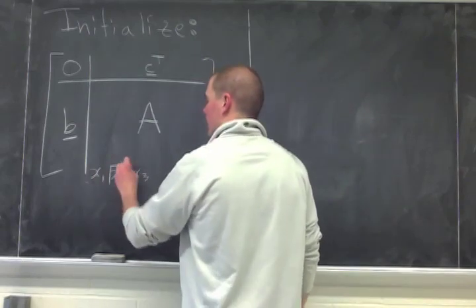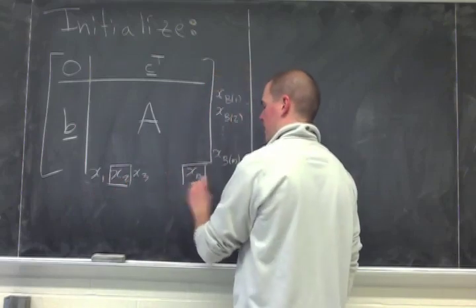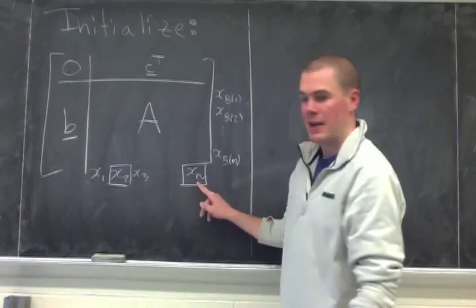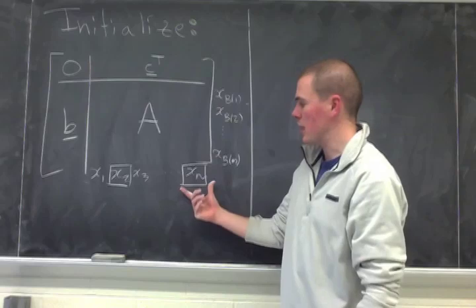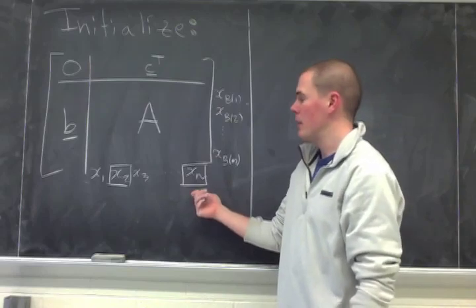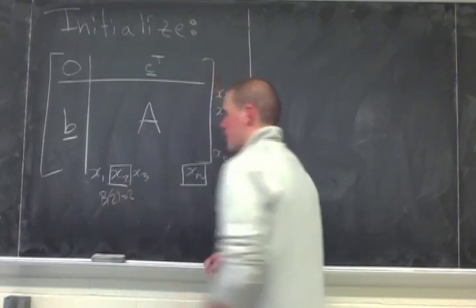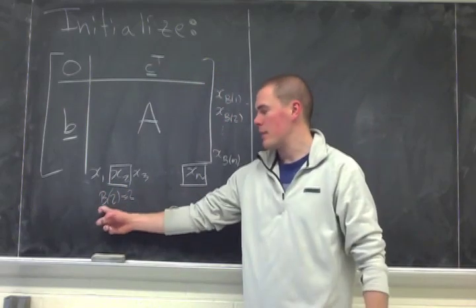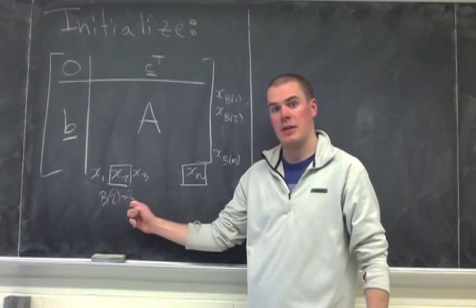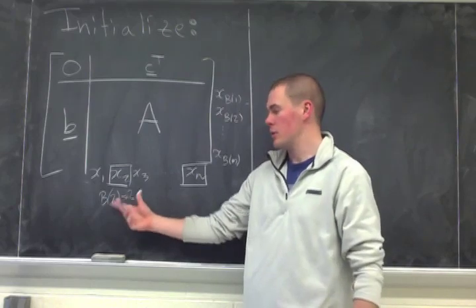For instance, if x2 and xn are in my basis, I will put squares around them here. If I have that my second basis element is the second variable, which could happen, then what I want to do...